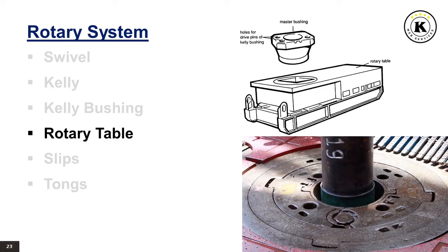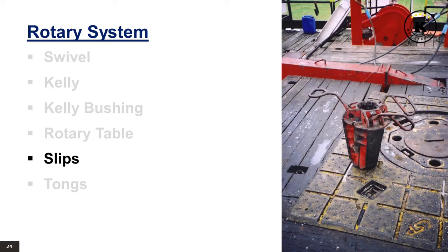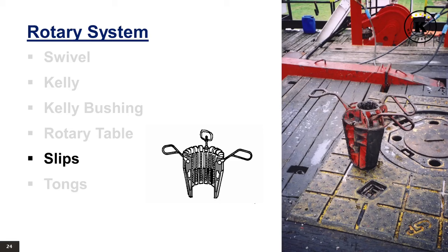The central opening is fitted with a master bushing split into two parts. Slips are used to hold the weight of the drill string when it is not supported by the hook, during connections or tripping time. Slips are made of hinged sections with a single opening, placed around the pipe, with their tapered outer sections fitting against either the inside surface — called bull — or the master bushing, or against the inserts. As the pipe is lowered, the slips' tapered section causes them to close tightly around the pipe.